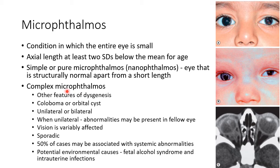Now let us discuss about complex microophthalmos. In this case, the eye is small with other features of dysgenesis, which can be in the form of coloboma or orbital cyst. This picture shows bilateral complex microophthalmos with bilateral iris coloboma. This picture shows right microophthalmos with orbital cyst. Complex microophthalmos can be unilateral or bilateral, and when unilateral, the abnormalities may be present in the fellow eye. The vision is variably affected and it is a sporadic condition.